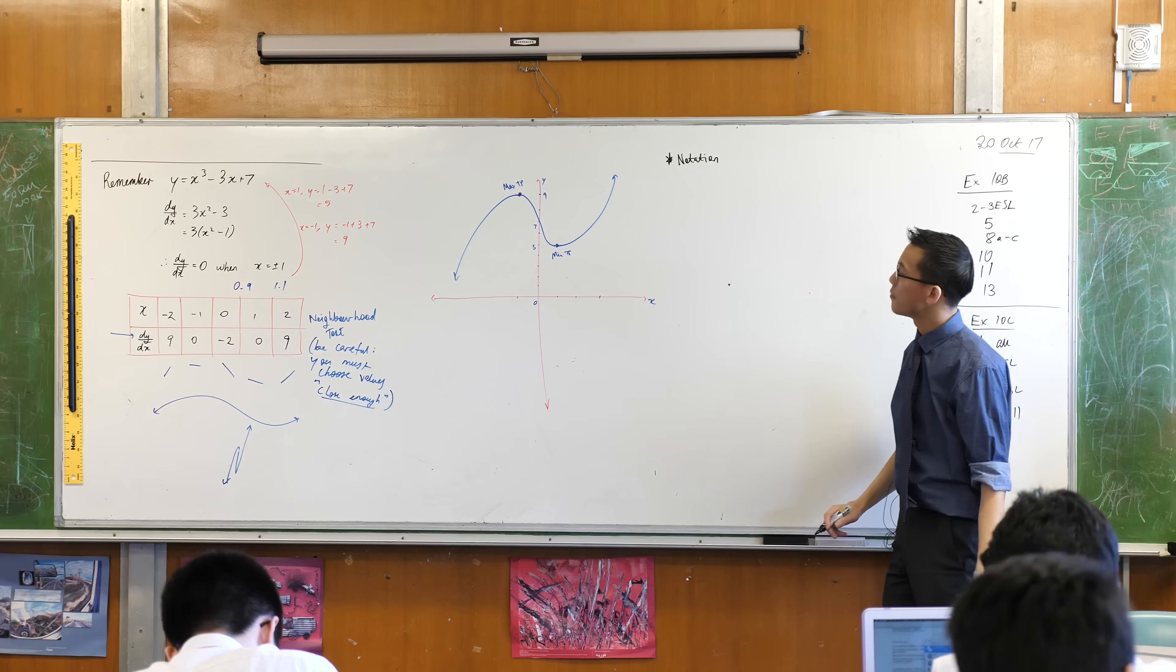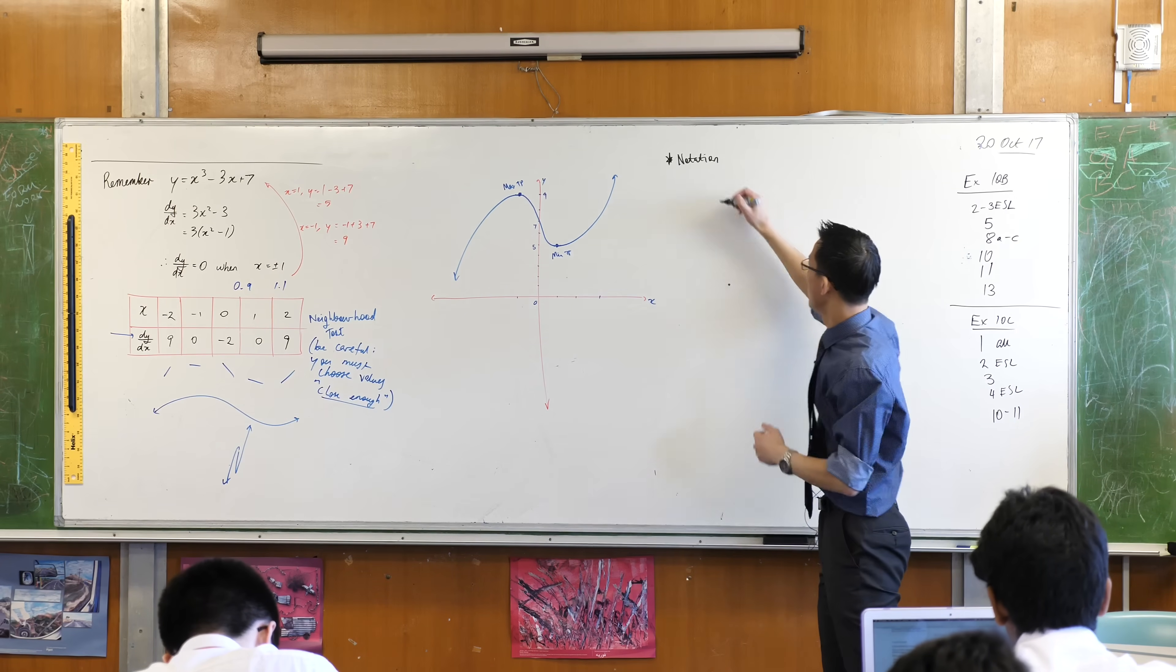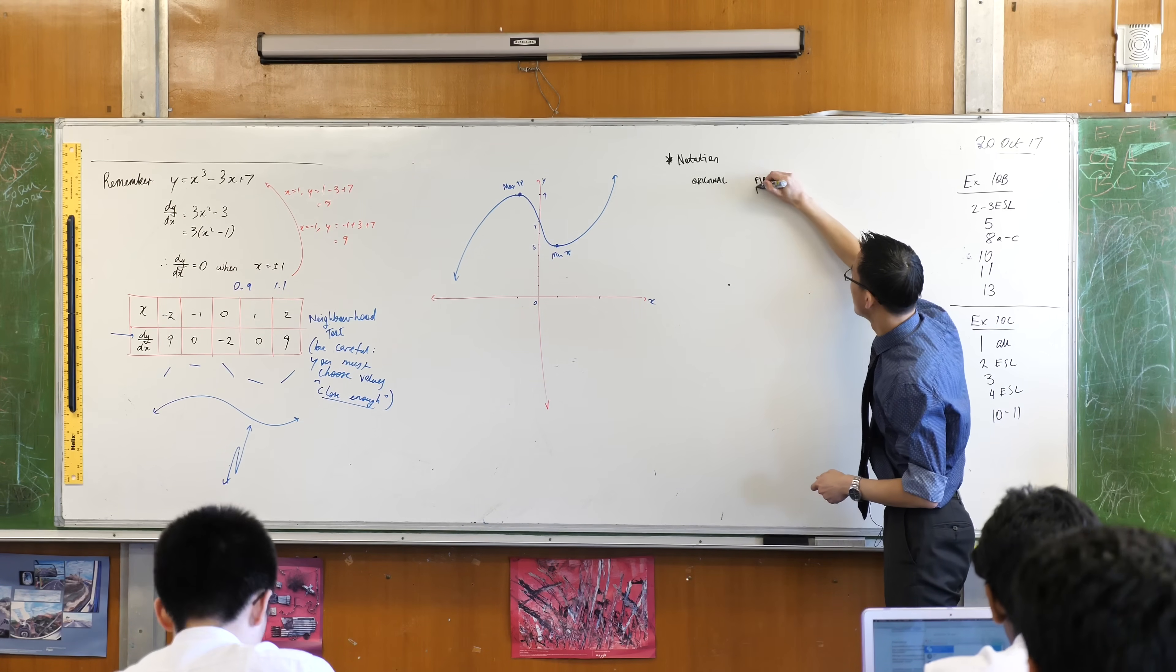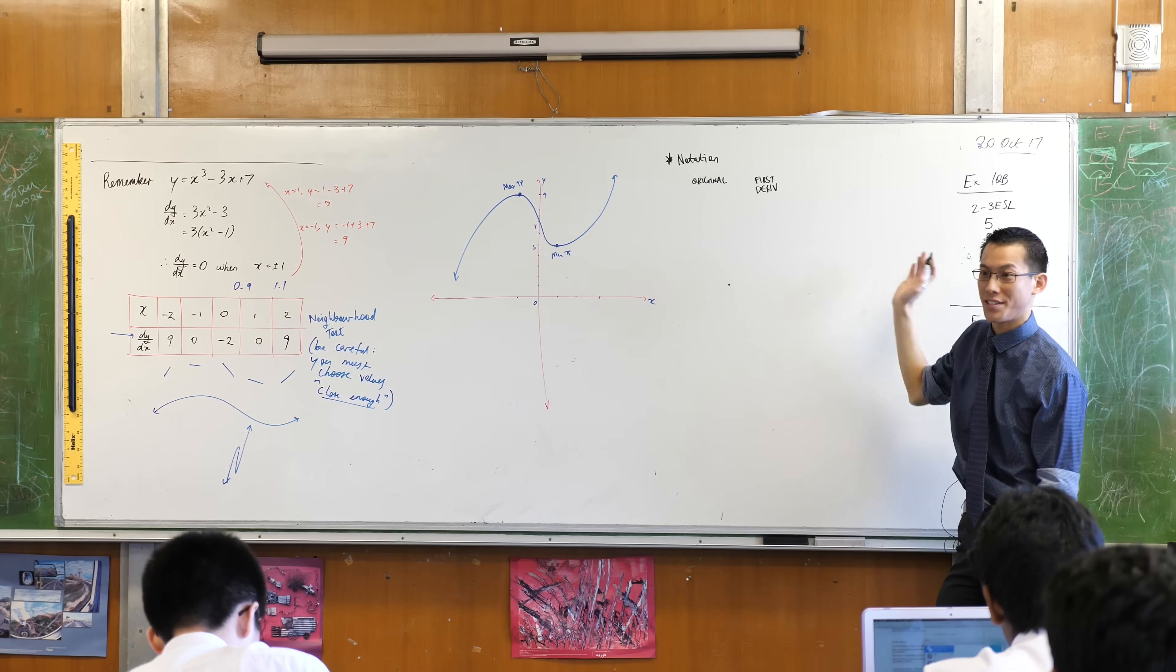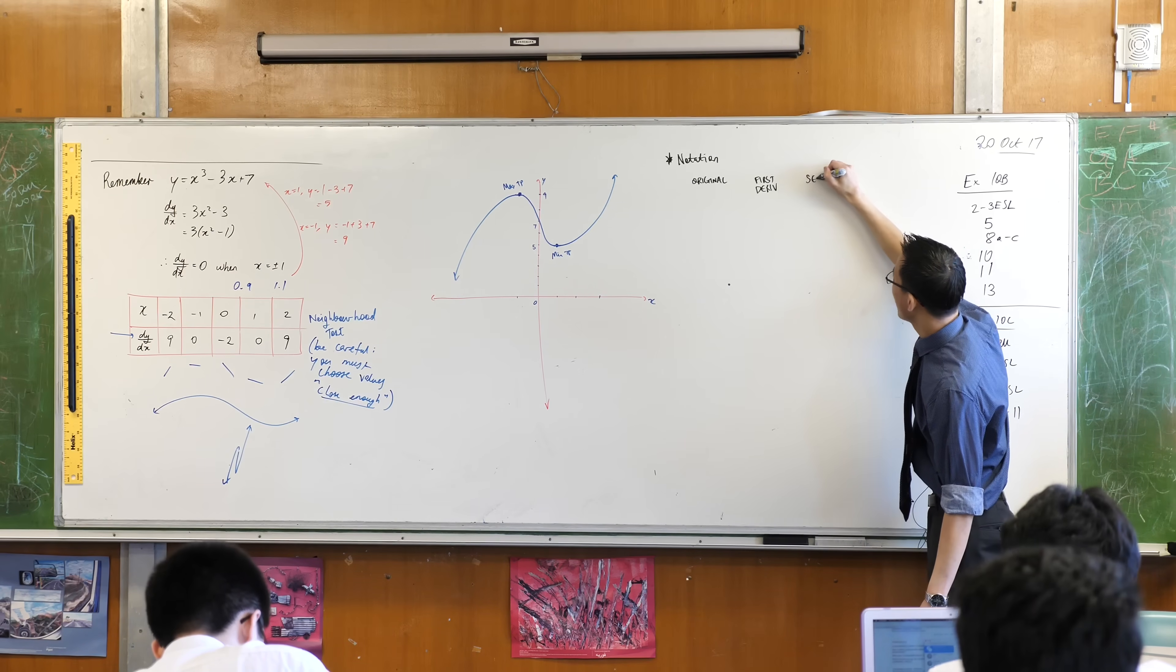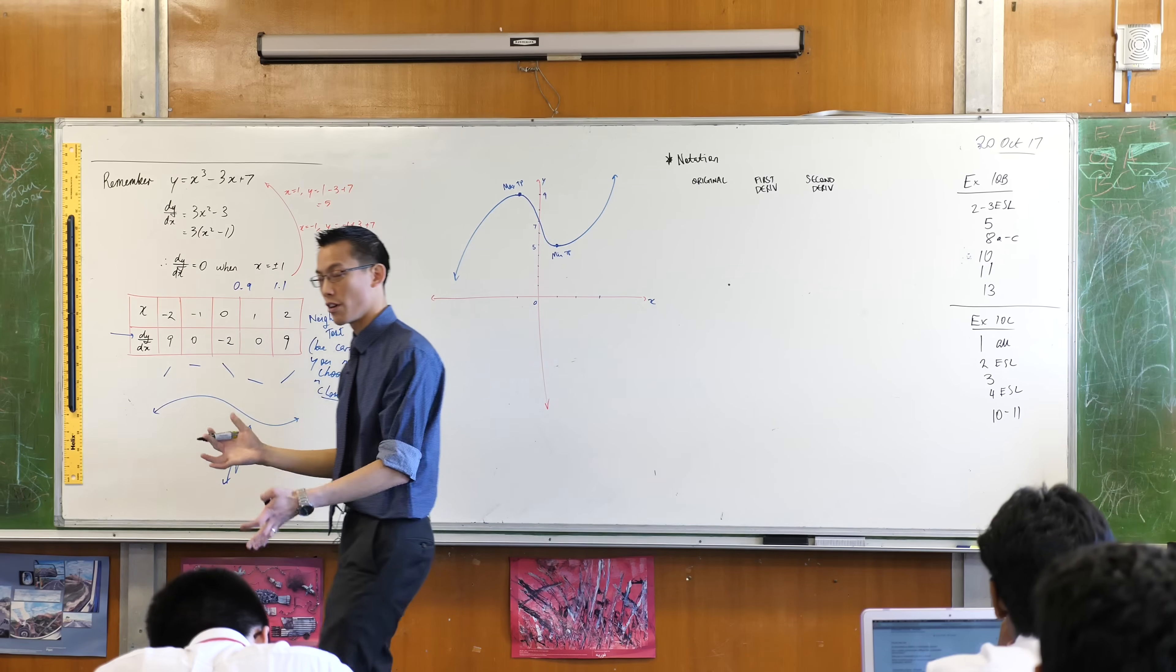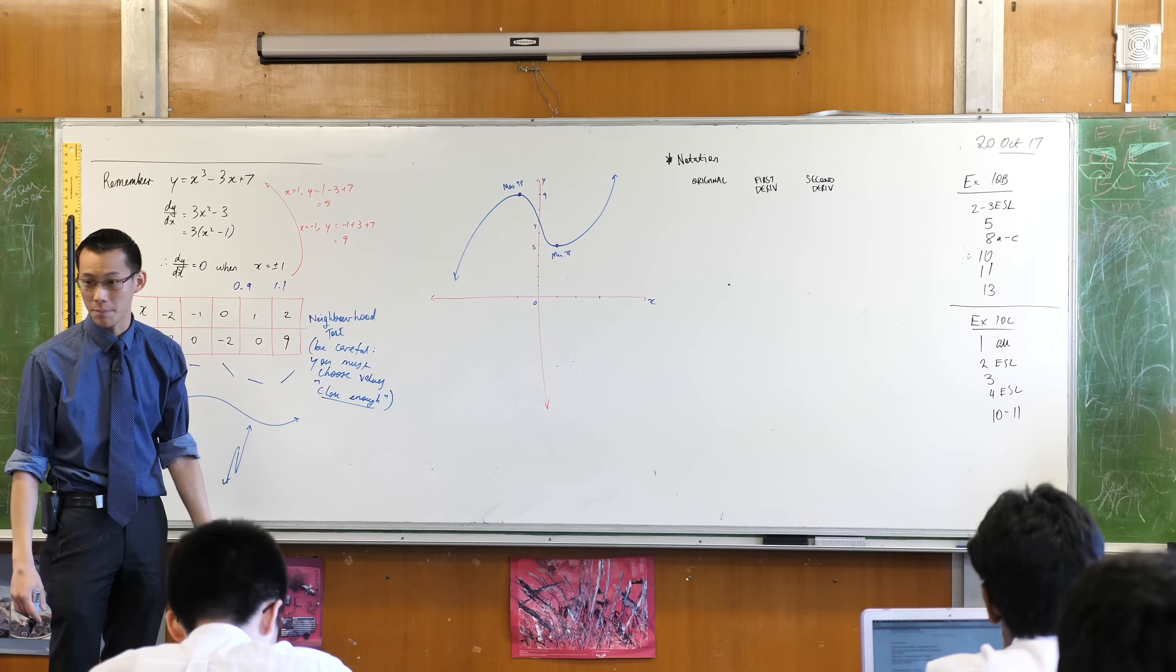We talk about three different objects that are the most important when you're trying to understand a function. You talk about the original function, you talk about the first derivative, and then because you're differentiating again, we call this next thing, no prizes for guessing, the second derivative. You can go ahead, you can find a third or a fourth or the fifth, it just turns out that those are not that useful or interesting. I mean you can use them for things, but we don't need them really. So these are the three objects I'm interested in.